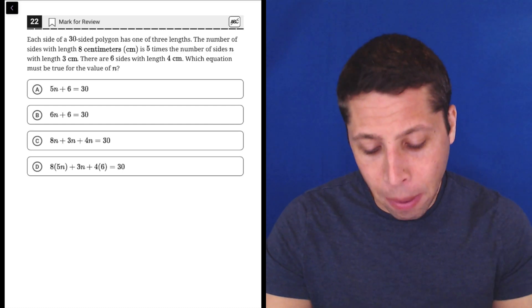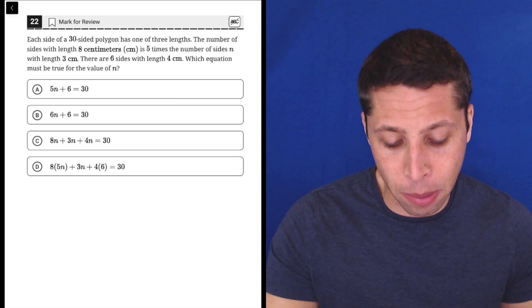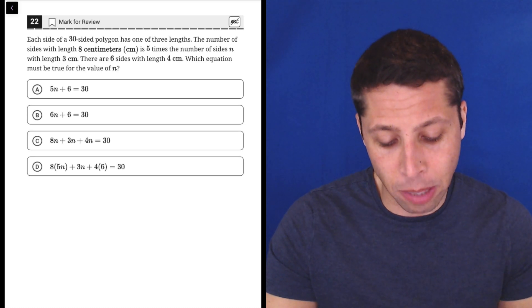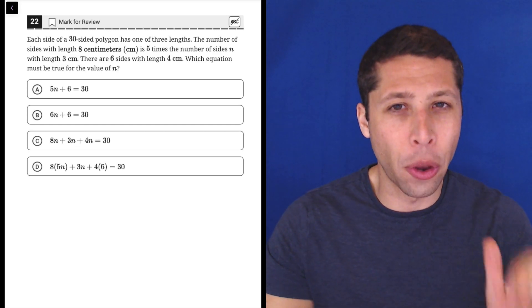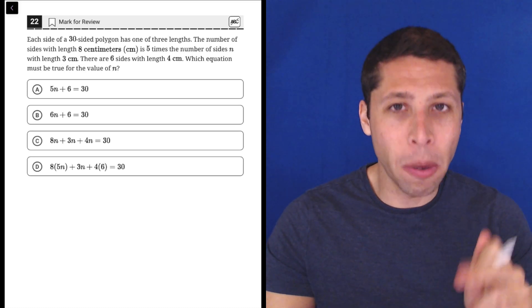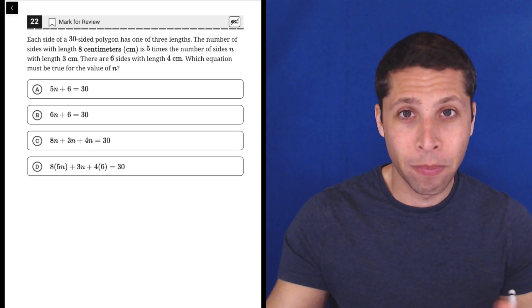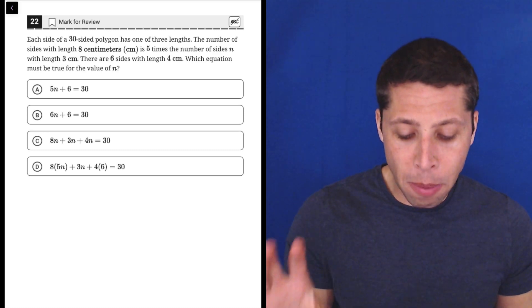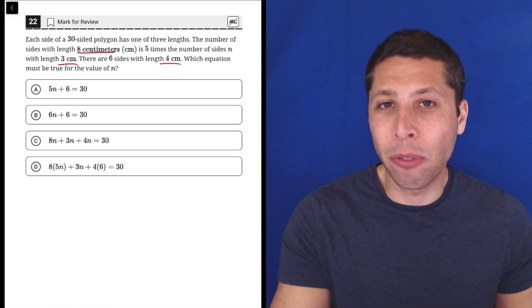So let me show you what I mean. They tell us this 30-sided polygon has each side is one of three lengths. The number of sides with length eight centimeters is five times the number of sides with lengths three centimeters. That sounds confusing. There are six sides with length four centimeters. Which equation must be true for the values of n? Now, one thing that already makes me suspicious is all of these are equal to 30, which is the number of sides, not the perimeter of the polygon. So the perimeter is a measure of distance. So if we took all the sides that are eight centimeters, add them up with all the sides that are three and all the sides that are four, we'd have a perimeter. But that's not what they're asking for. So the fact that they're all equal to 30 tells me we're probably not using these dimensions. This is a trap.